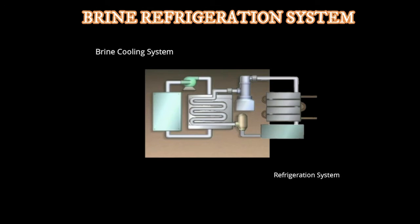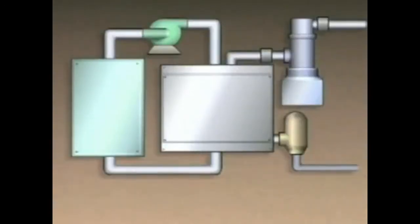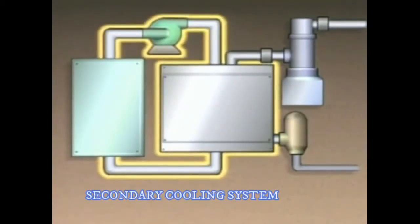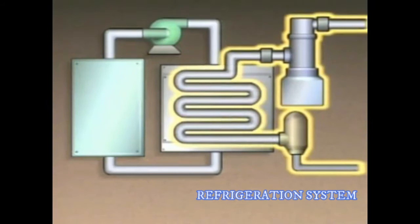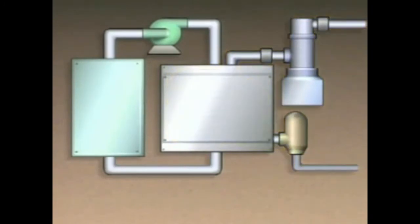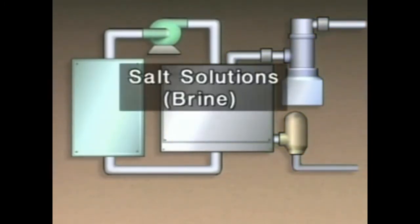In industrial facilities, refrigeration systems are often combined with other systems. A vapor compression refrigeration system can be used with a secondary cooling system. Secondary cooling systems are used in many process industries to remove heat from processes and equipment, and a refrigeration system in turn removes the heat from the secondary cooling system.